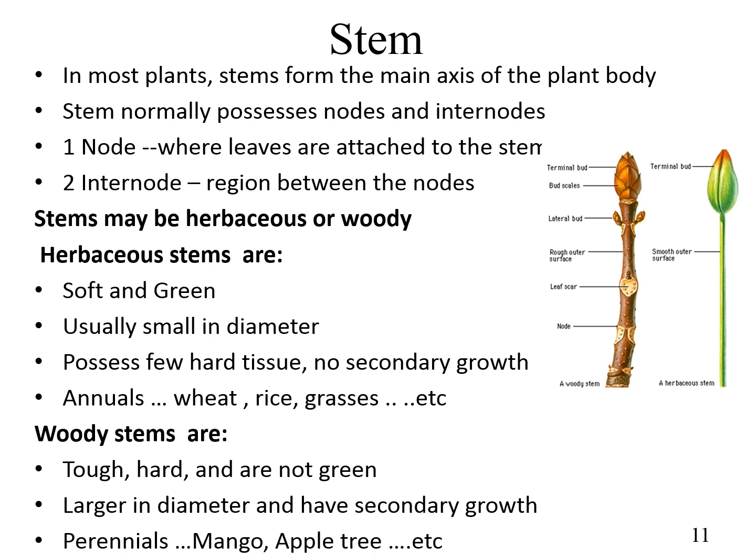Herbaceous stems are soft in nature and green in color, usually small in diameter, with secondary growth absent and few hard tissues, mostly occurring in annual plants — for example, wheat, rice, and grasses. Woody stems are tough and hard in nature, not green in color, larger in diameter, have secondary growth, and are mostly found in perennial plants — for example, mango and apple trees.